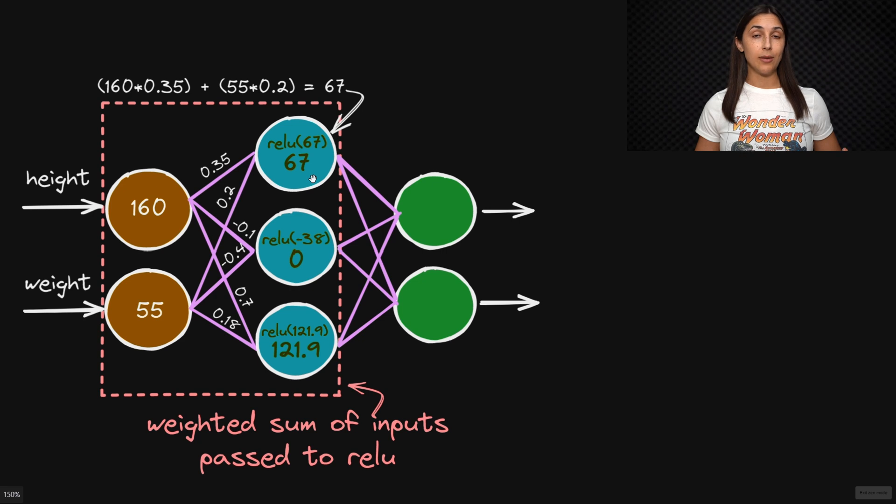We'll learn much more detail about ReLU in a later lesson. Now we talked about the importance of the fact that the activation function that we use is nonlinear. But why is that? Well, one key point about linear functions is that if we have a composition of linear functions, then that composition itself will also be linear.